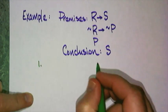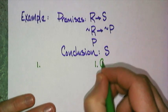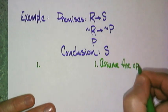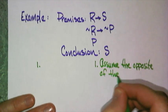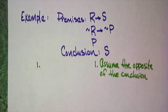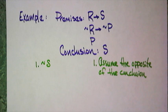In an indirect proof, like a conditional proof, we start off with a sentence — an assumption. We're going to start off with the opposite of the conclusion. If the conclusion is S, the opposite of the conclusion is not S. So like the conditional proof, we have an extra bit of information, and now we just go through the steps like we would a direct proof.